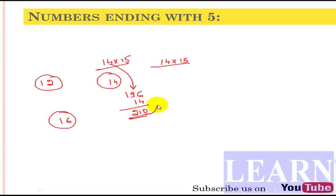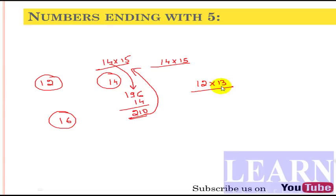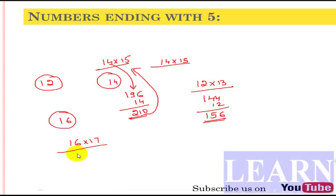Similarly, 12 times 13: take 12 squared which is 144, then add 12 to get 156. And 16 times 17: take 16 squared which is 256, then add 16 to get 272. This consecutive number multiplication trick is very useful.